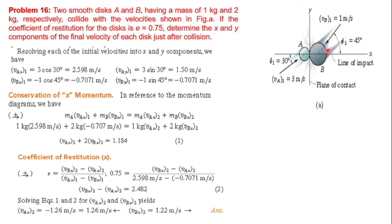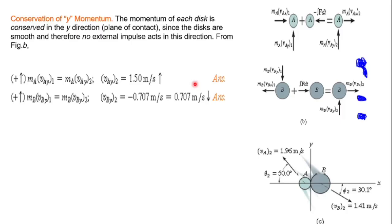For the y direction, we have individual particle momentum conservation. The mass is the same, so initial velocity equals final velocity in the y direction. For disk A, the initial velocity in y is 1.5 meters per second. For disk B, it is also 1.5 meters per second. Taking upward as positive and downward as negative.